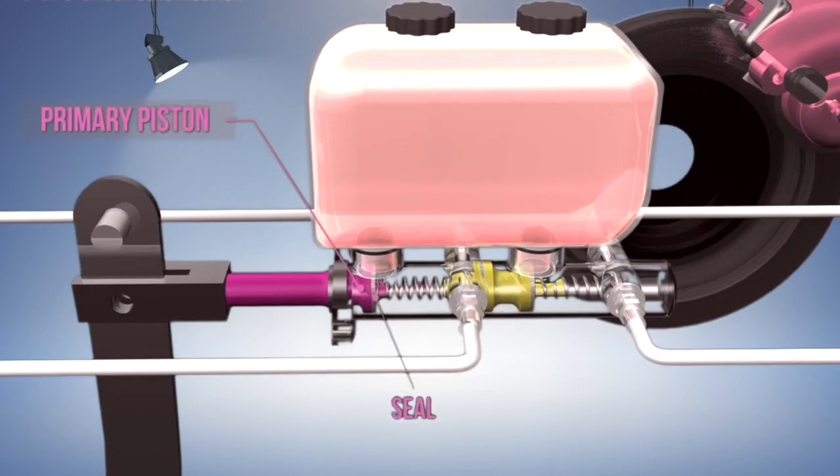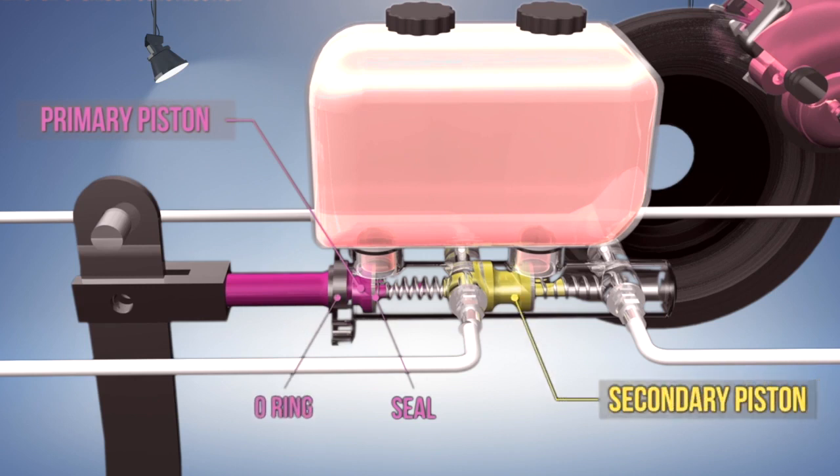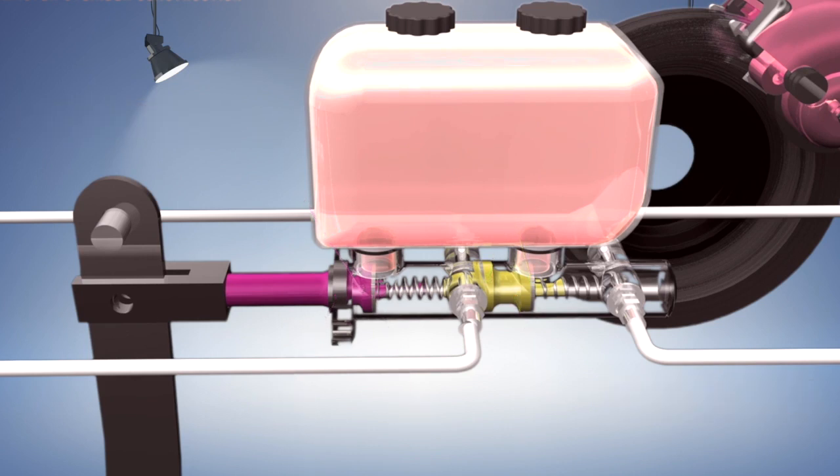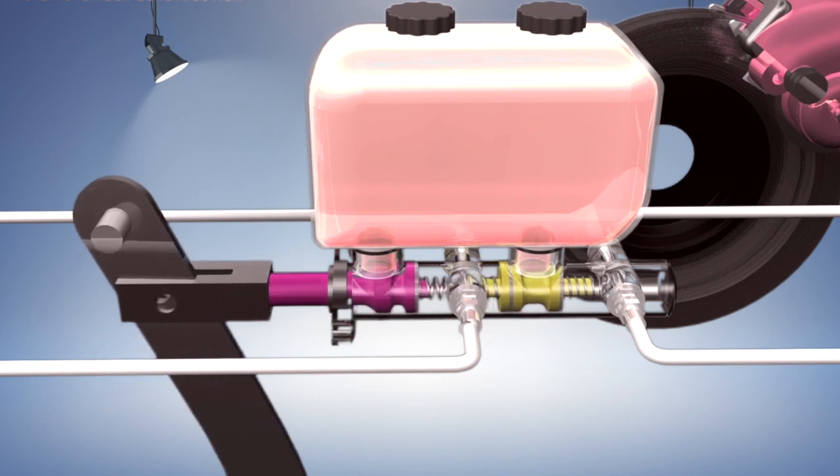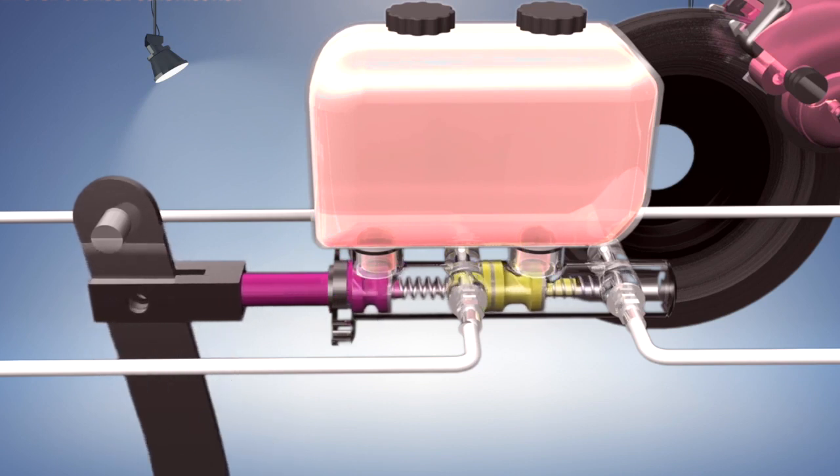The primary piston has a seal located at the front and a secondary cup or o-ring at the rear. The secondary piston has a primary seal, one facing forward and the other one facing rearward. Return springs are used to push the piston back to its resting position when the brake pedal is released.